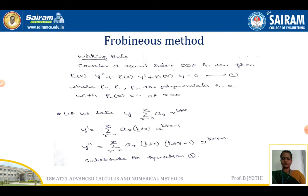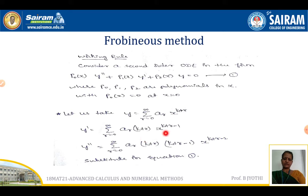Now let us take y = Σ ar·x^(k+r). On differentiation, y' = Σ ar·(k+r)·x^(k+r−1). Coming to y'', the second derivative, we get y'' = Σ ar·(k+r)·(k+r−1)·x^(k+r−2).